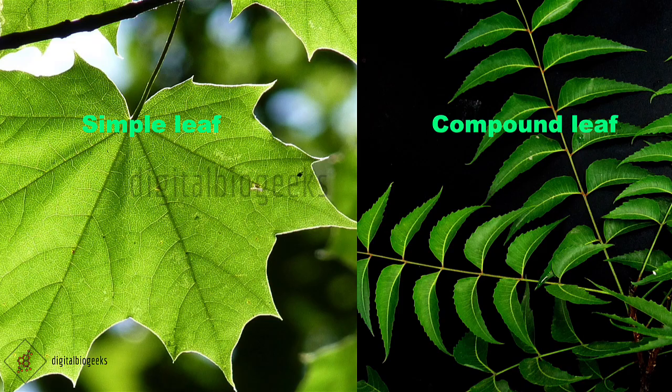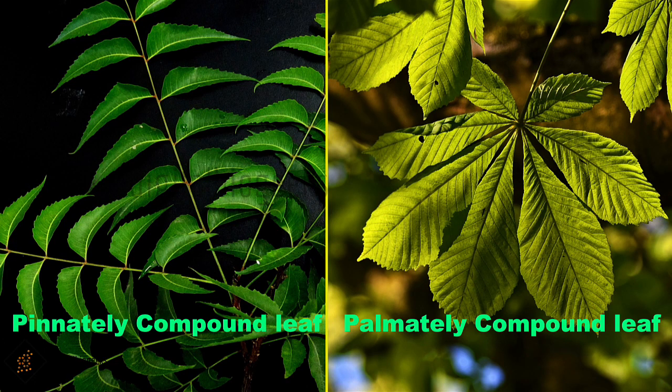Compound leaves can be of two types: pinnately compound and palmately compound. In pinnately compound leaves, many leaflets are present on a common axis — a row of leaflets forms on either side of an extension of the petiole called the rachis. We can observe pinnately compound leaves in neem. In palmately compound leaves, the leaflets are attached at a common point and radiate from a single point at the distal end of the petiole. For example, cotton leaves.